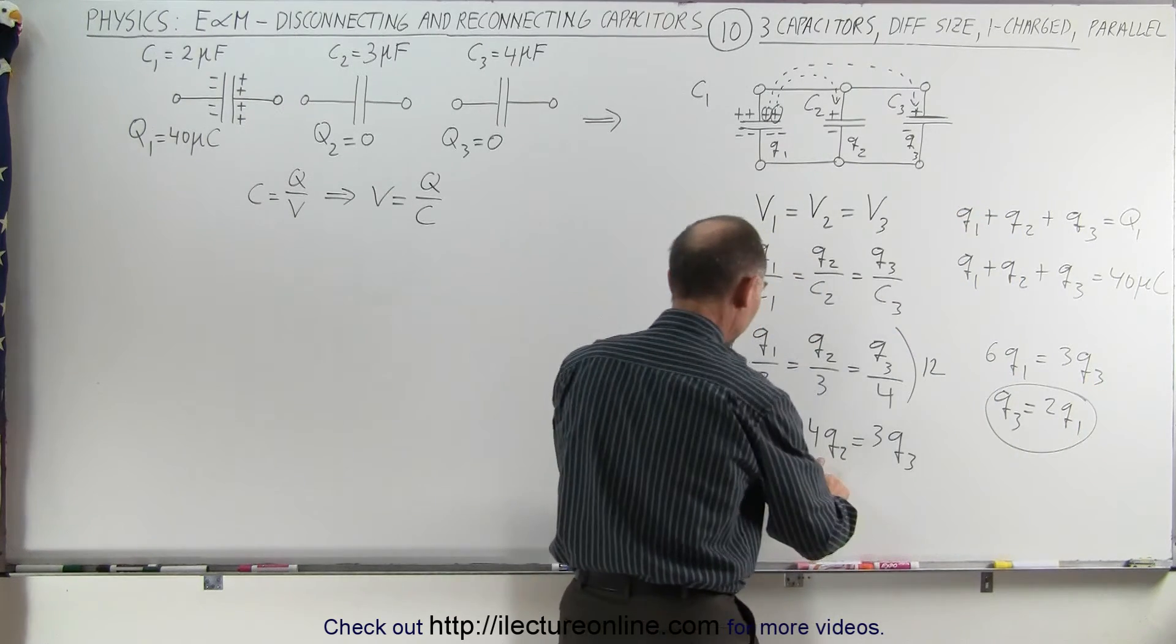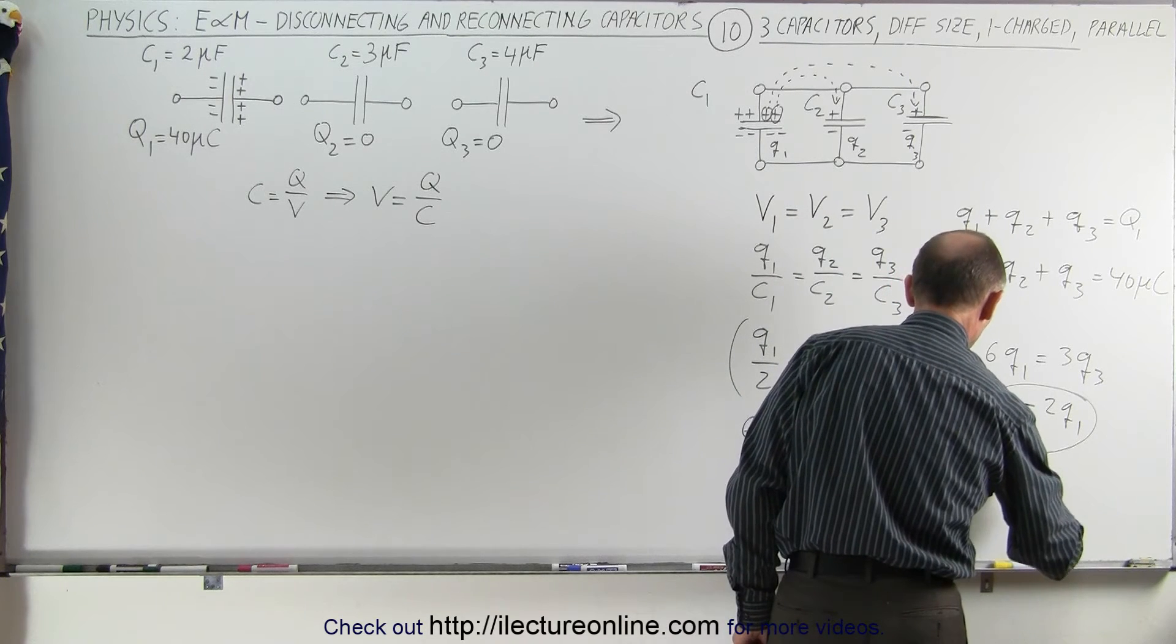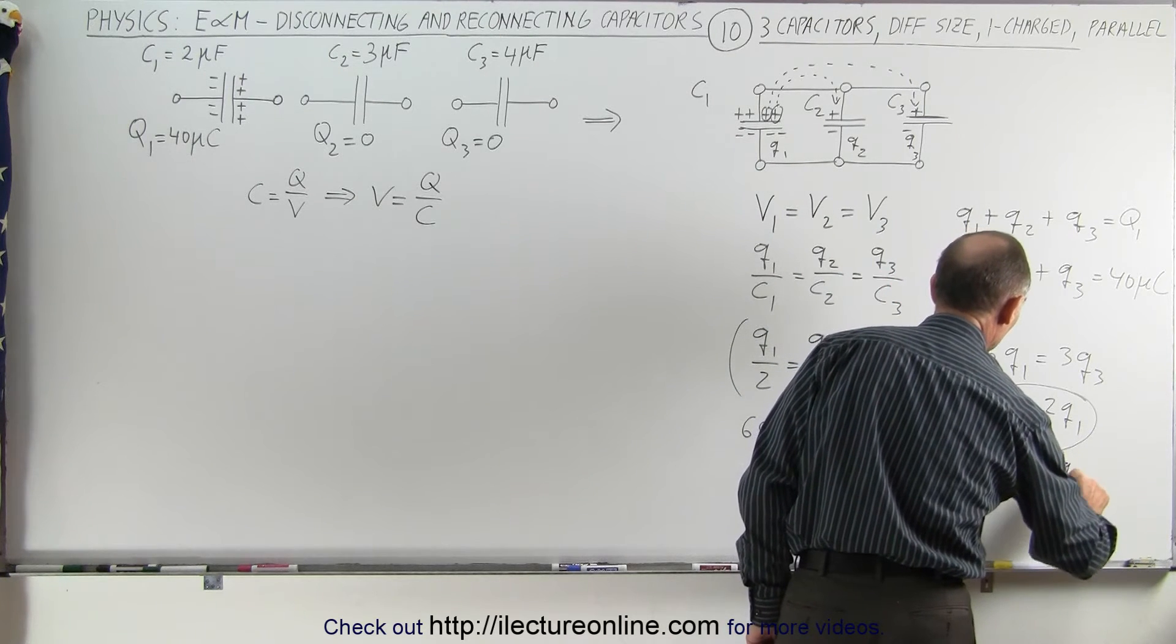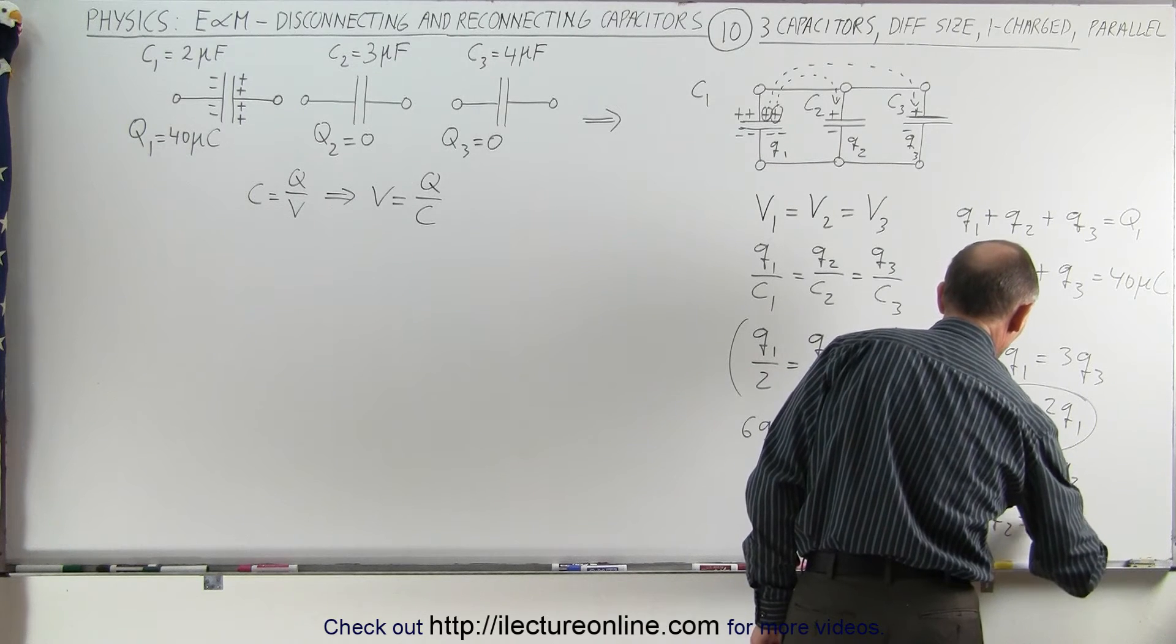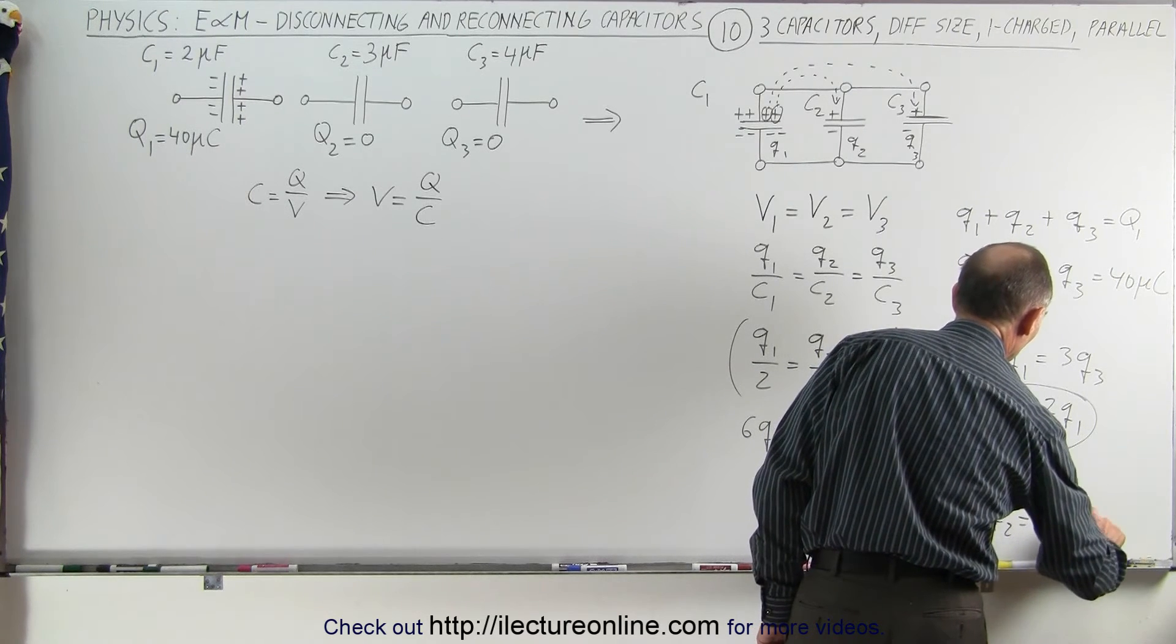And likewise when I set those two equal to each other, 6q1 equals 4q2, which means that q2 is equal to 1.5q1.